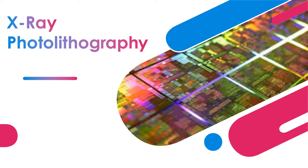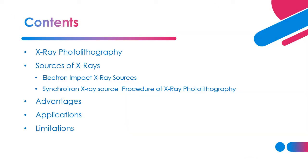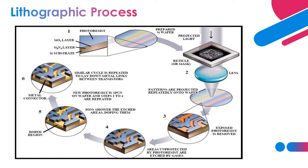Assalamu'alaikum everyone. Today's lecture will be X-ray photolithography. The lithographic process for photolithography, X-ray lithography, and electron beam lithography is almost the same. It starts with a layer of photoresist, then you perform the printing and development of the circuit, and finally you etch the photoresist in order to get the product.